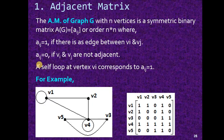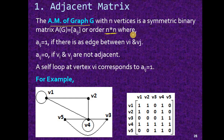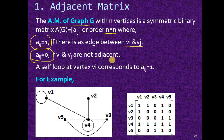We will start with the adjacency matrix. The adjacency matrix of graph G can be denoted as a binary matrix of order n by n, where n is the number of vertices. The matrix value is 1 if there is an edge between vertex i and vertex j, and 0 if there is no edge between vi and vj, meaning they are not adjacent. If there is a self-loop at vertex vi, the corresponding value is also 1.